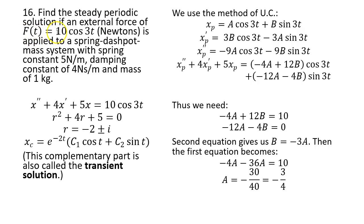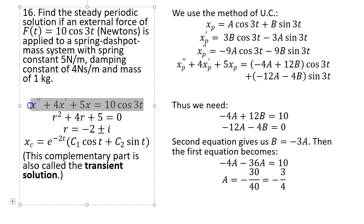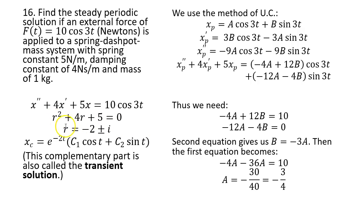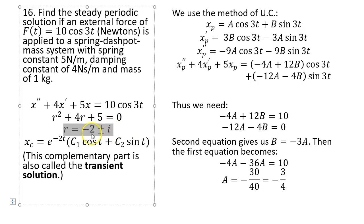Problem 16: find the steady periodic solution when external force F(t) = 10·cos(3t) N is applied to a spring-dashpot-mass system with k=5, c=4, m=1. The equation is x'' + 4x' + 5x = 10·cos(3t). First find the complementary solution by solving the characteristic equation using completing the square or the quadratic formula.